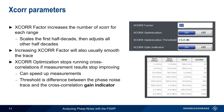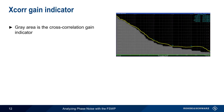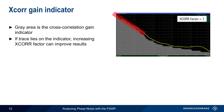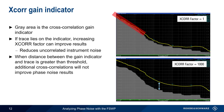Now would be a good time to explain the cross-correlation gain indicator. It appears as a grey region beneath the phase noise plot, and its size and shape depend on the cross-correlation factor used. If the trace lies on the indicator, increasing the number of cross-correlations should increase the separation, leading to more accurate phase noise results by reducing the amount of uncorrelated instrument noise. When the distance between the trace and this region is greater than the threshold, additional cross-correlations will not improve phase noise results, although they may smooth the trace further.